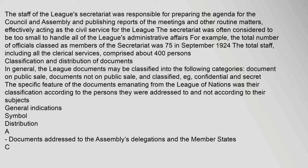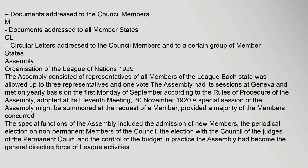In general, League documents may be classified into the following categories: documents on public sale, documents not on public sale, and classified documents, e.g., confidential and secret. The specific feature of the documents emanating from the League of Nations was their classification according to the persons they were addressed to and not according to their subjects. General indications of symbol distribution: A — documents addressed to the Assembly's delegations and member states; C — documents addressed to Council members; M — documents addressed to all member states; C.L.C. — circular letters addressed to Council members and a certain group of member states.